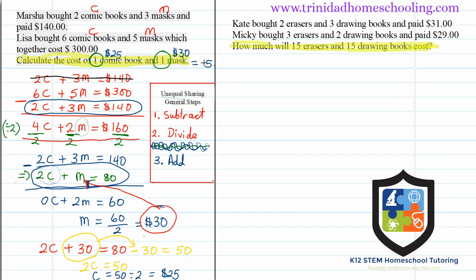So $25 plus $30 — the cost of one comic book and one mask together — is $55. Now on the right-hand side: how much will 15 erasers and 15 drawing books cost? They are not asking us to find one of each item — they're asking us straight away to find the cost of 15 of each.